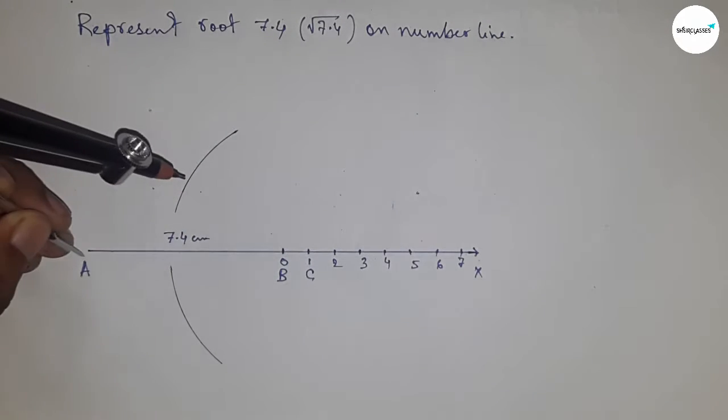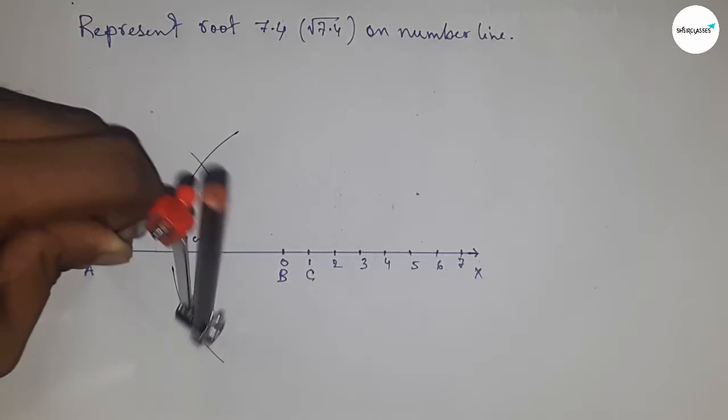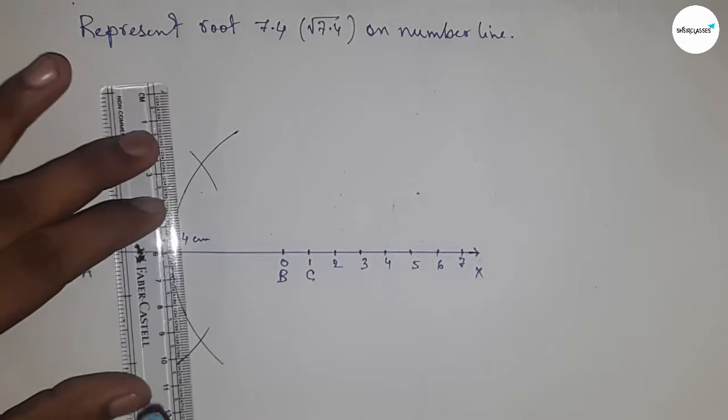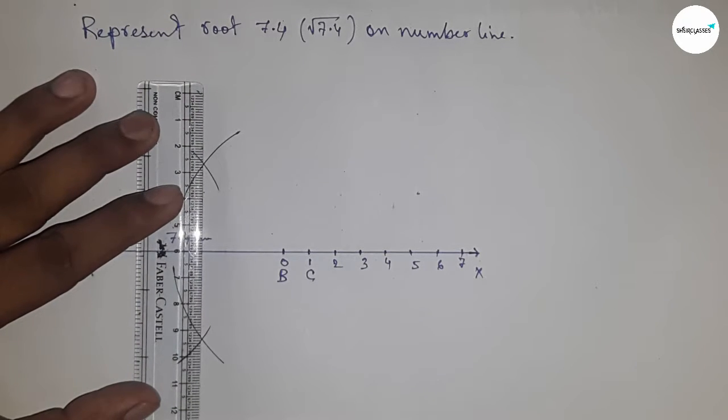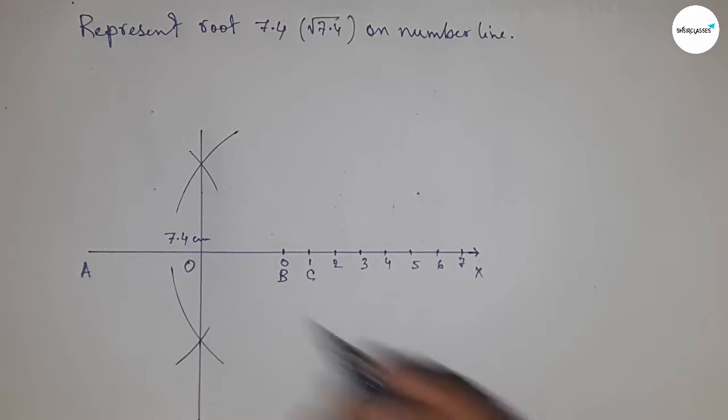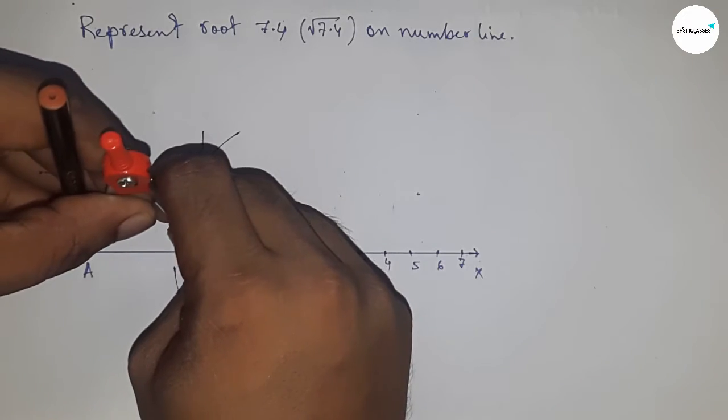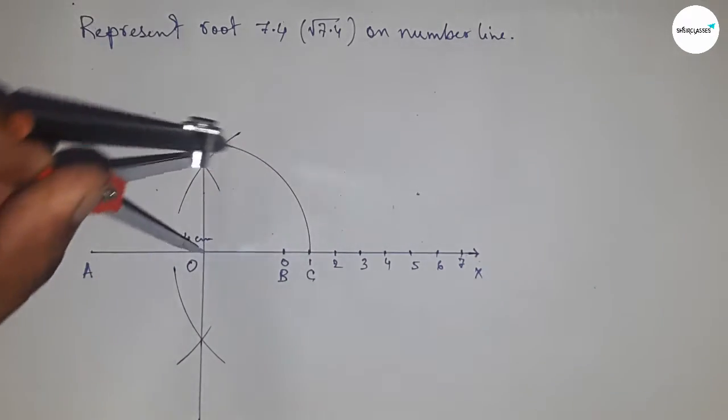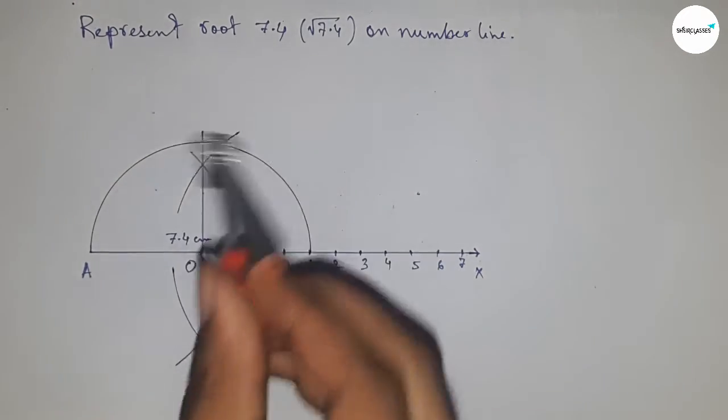Drawing arcs this way, and with the same length, putting the compass here and cutting the arcs. Next, joining these which meet at point O. Now taking the distance OA and OC to draw a semicircle.